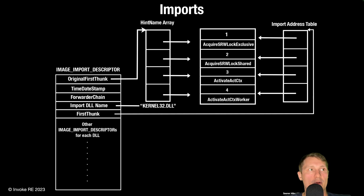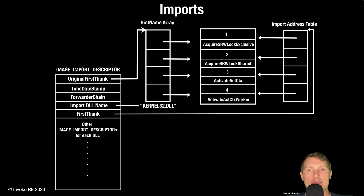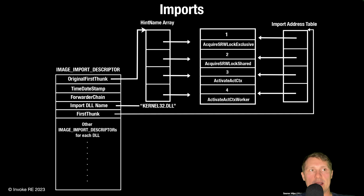Imports are used to define functions needed by the PE from external libraries to execute at runtime. The Windows loader uses the image import descriptor data directory in order to resolve imports at runtime. This data directory points to an array of image import descriptors, which include the import DLL name and references to two separate arrays: the hint name array and the import address table. The hint name array contains information needed to load each import from the DLL, which is then used to overwrite the import address table in memory with the resolved import addresses. Functions can be loaded by ordinal or by function name. Ordinals are numbers which correspond to a given function and can be used to resolve a given function rather than using the name itself.